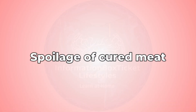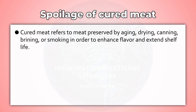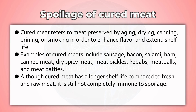Spoilage of Cured Meat. Cured meat refers to meat preserved by aging, drying, canning, brining, or smoking in order to enhance flavor and extend shelf life. Examples of cured meats include sausage, bacon, salami, ham, canned meat, dry spicy meat, meat pickles, kebabs, meatballs, and meat patties. Although cured meat has a longer shelf life compared to fresh and raw meat, it is still not completely immune to spoilage.